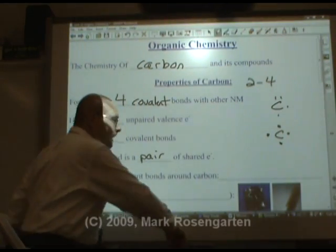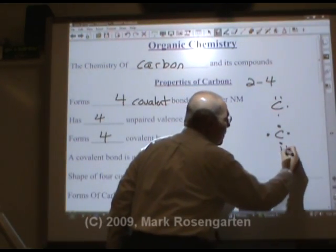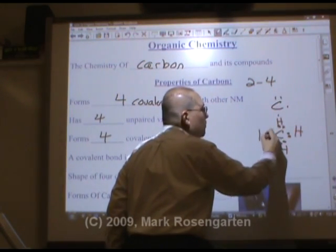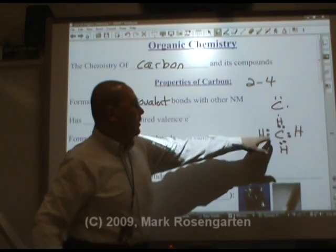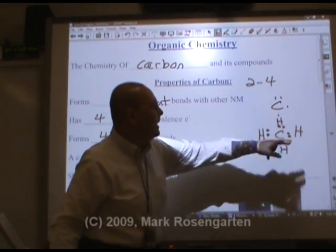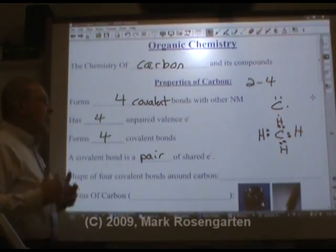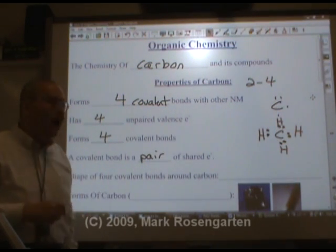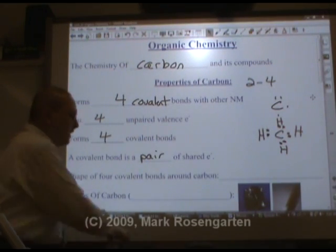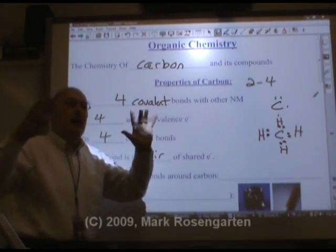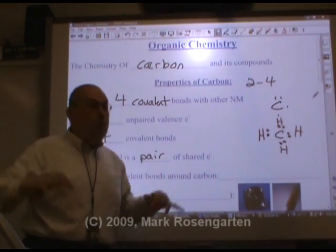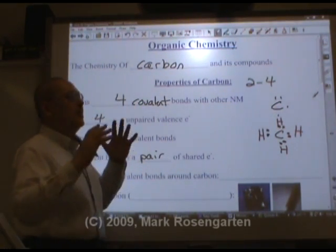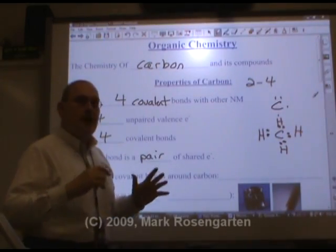You can't form a bond unless electrons are being shared, and a shared pair of electrons is a covalent bond. There's a covalent bond, there's a covalent bond, there's a covalent bond, there's a covalent bond. Because we've got carbon in the middle and four atoms around it, the shape of those four covalent bonds — cast your mind back — four bonds around the central atom is tetrahedral, four-sided.